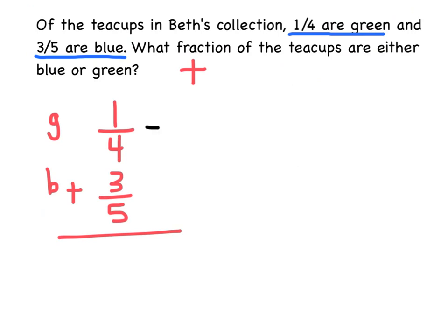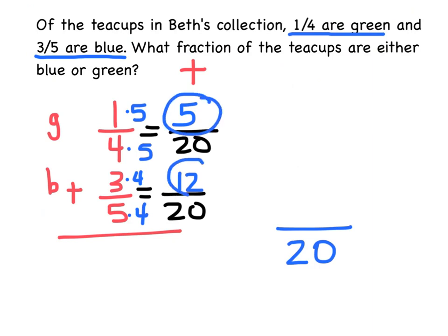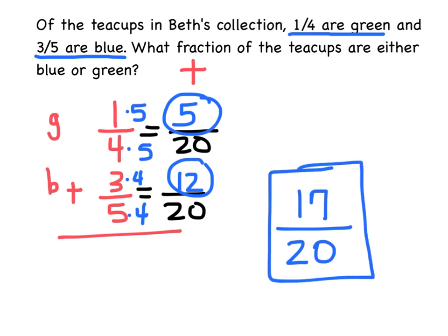Before I can add fractions, I need to get a common denominator, which is going to be 20. How do you get from 4 to 20? It's times 5, so I need to do that on the top and I get 5. Down below, from 5 to 20, it's times 4, so I'm going to do 3 times 4, which is 12. Now when I'm adding fractions, remember the denominator stays, and then you just add the numerators. So 5 and 12 gives me 17-twentieths. Of the teacups, 17-twentieths of them are either blue or green.